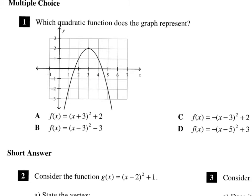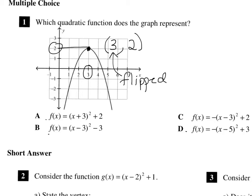To figure out number 1, you have to look and see where the vertex is, because all these answers are in vertex form. The coordinates of that point are 3 over and 2 up. In vertex form, the x sign will be flipped, so we're going to be looking for a negative 3 after the x, and that sign will stay the same. So we're looking for a plus 2 after the parentheses. That matches up with option C.